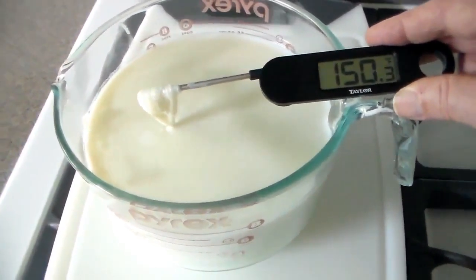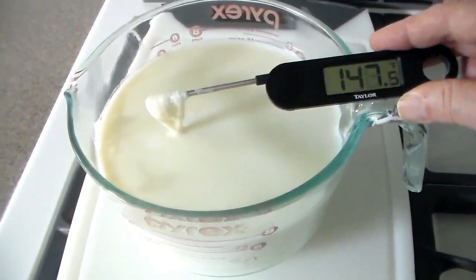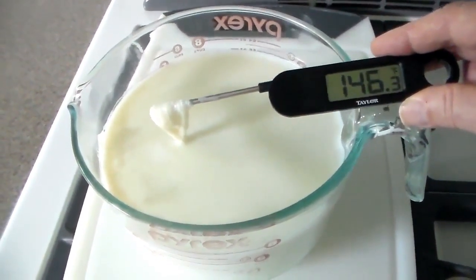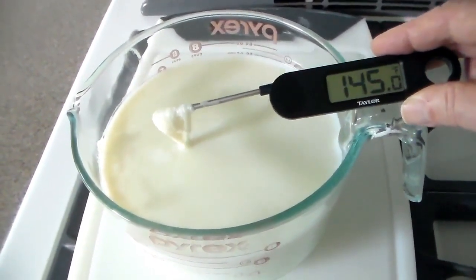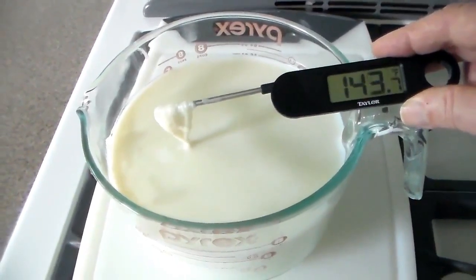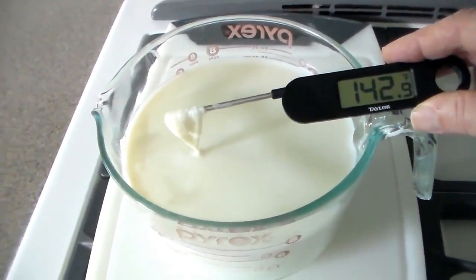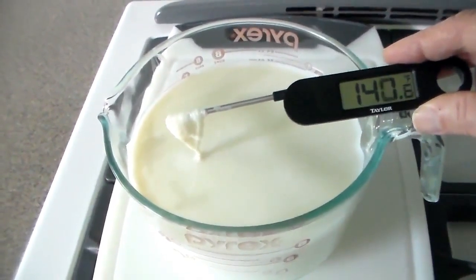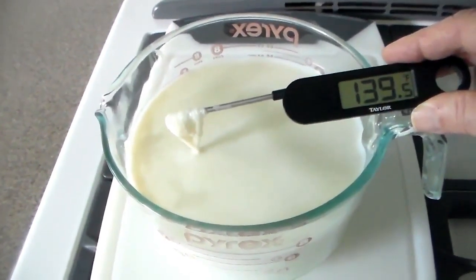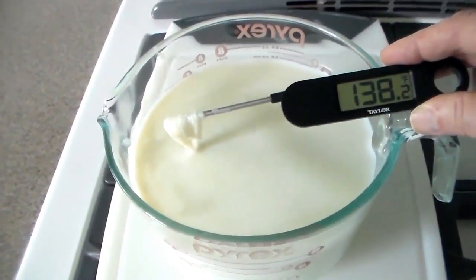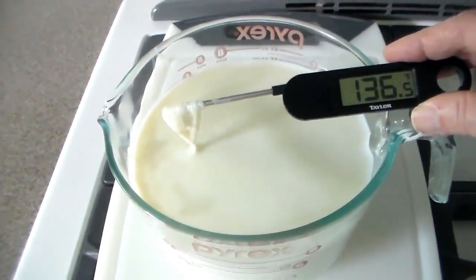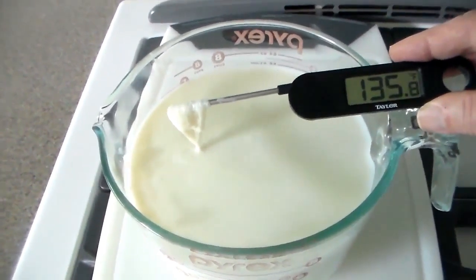Also, this thermometer, I really like it. It has very large numbers on it. And I found this at Target for about $10. You can use any kind of thermometer you wish. Now we're going to let the hot milk set until we reach about 110 degrees.